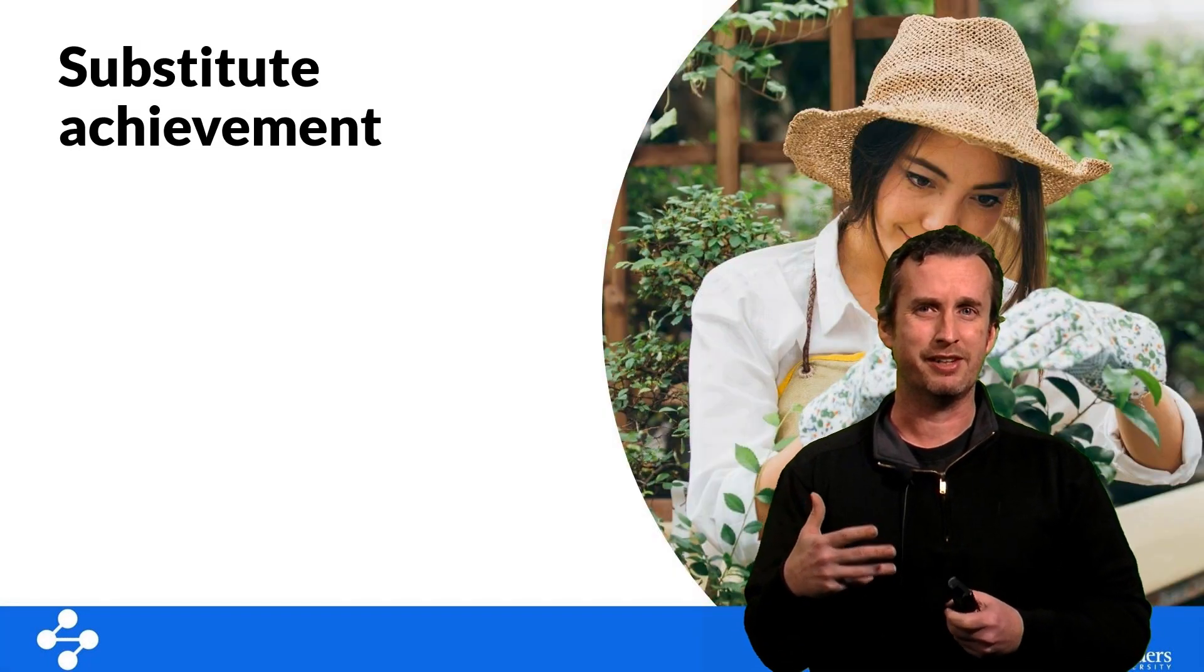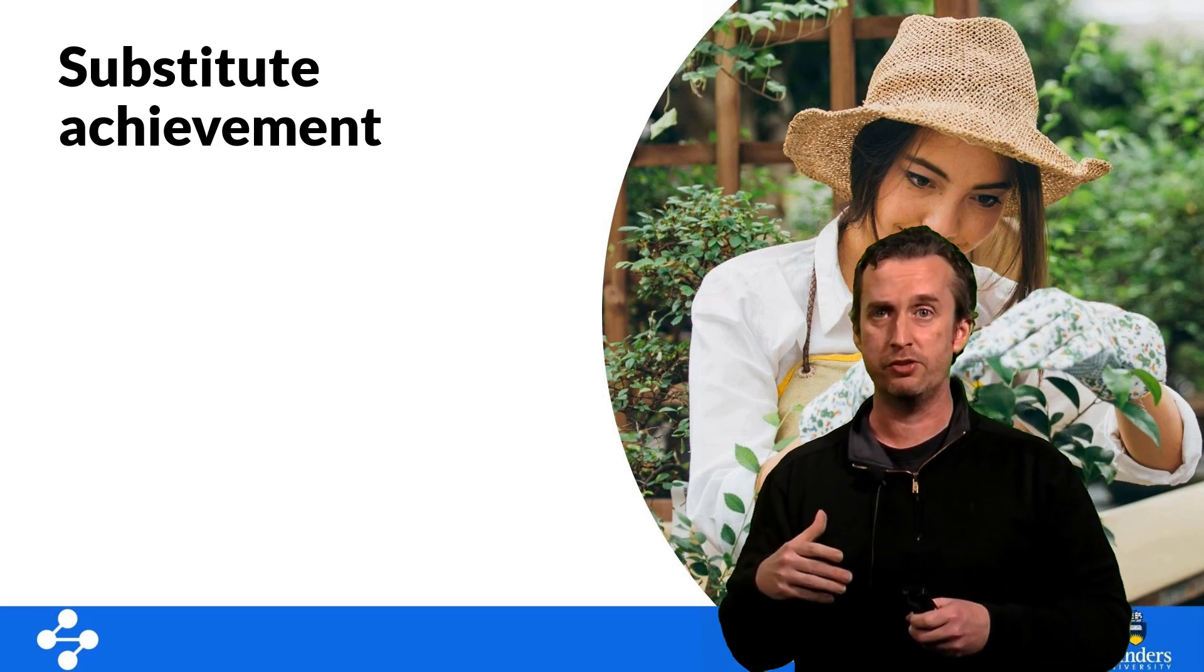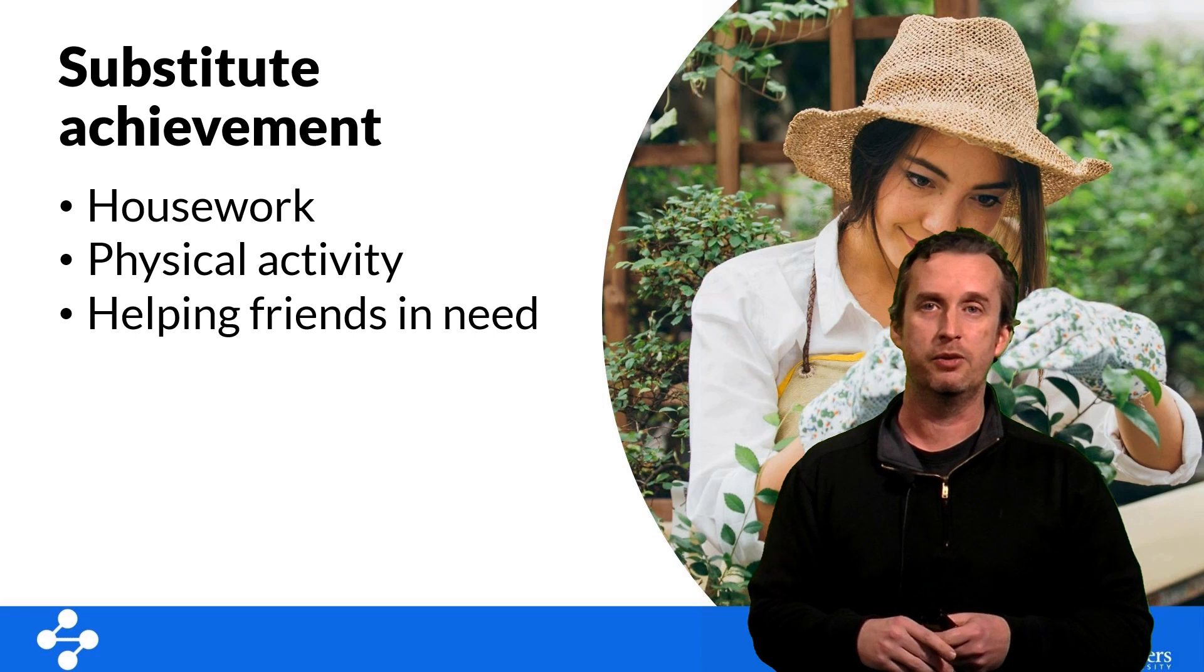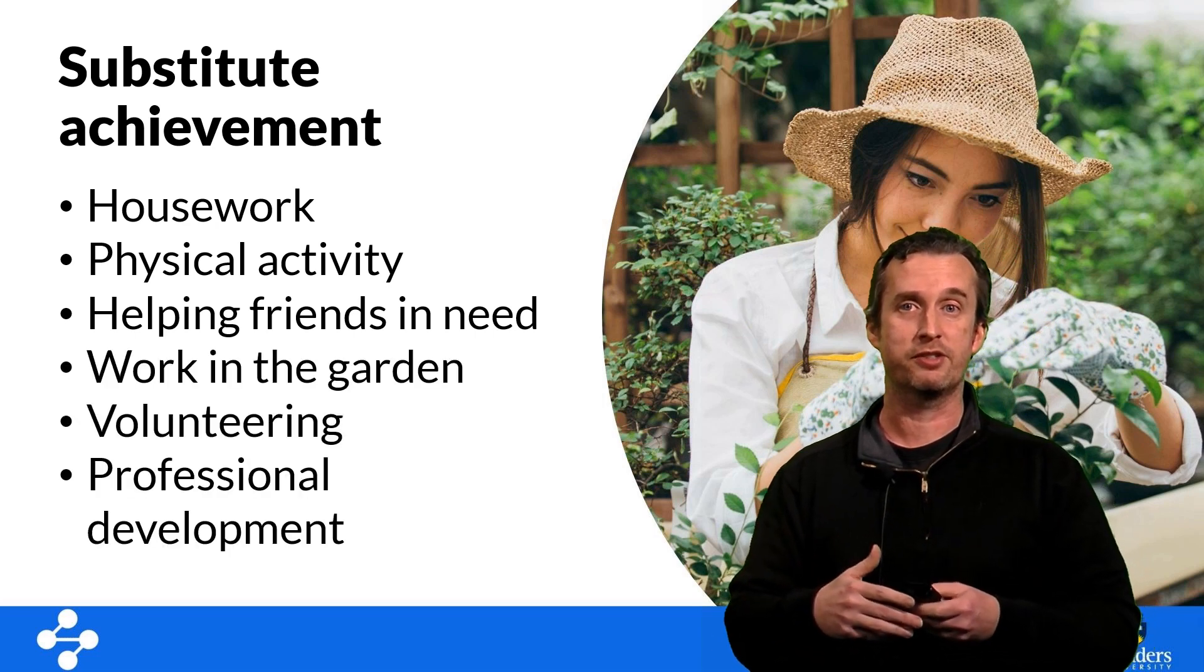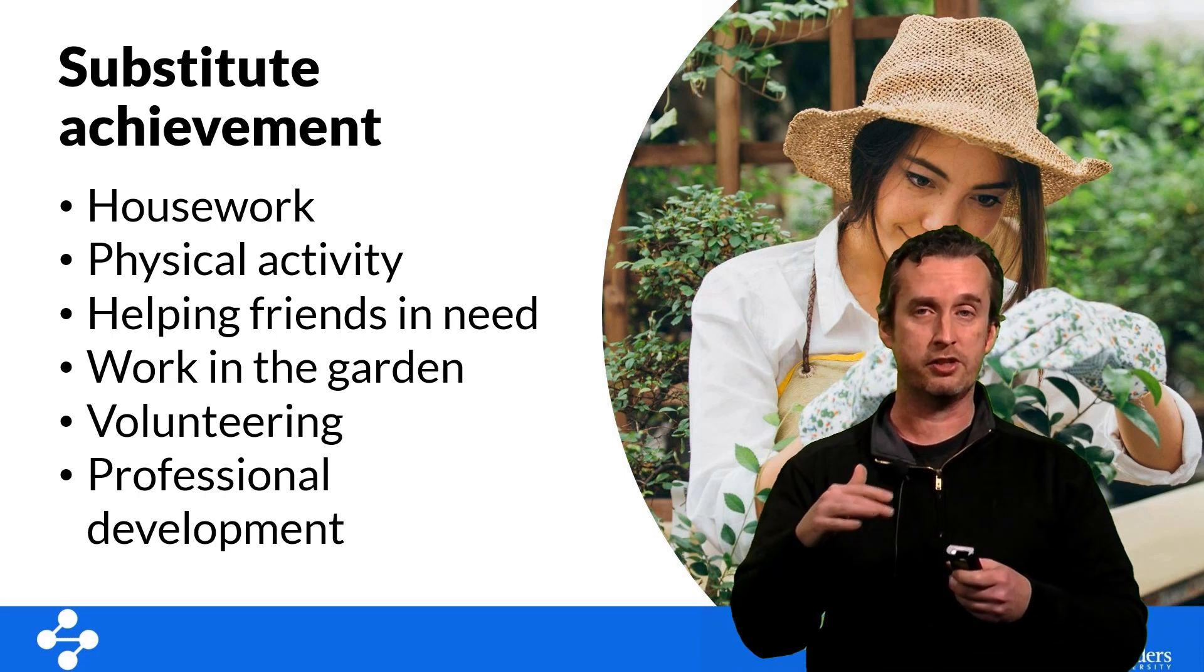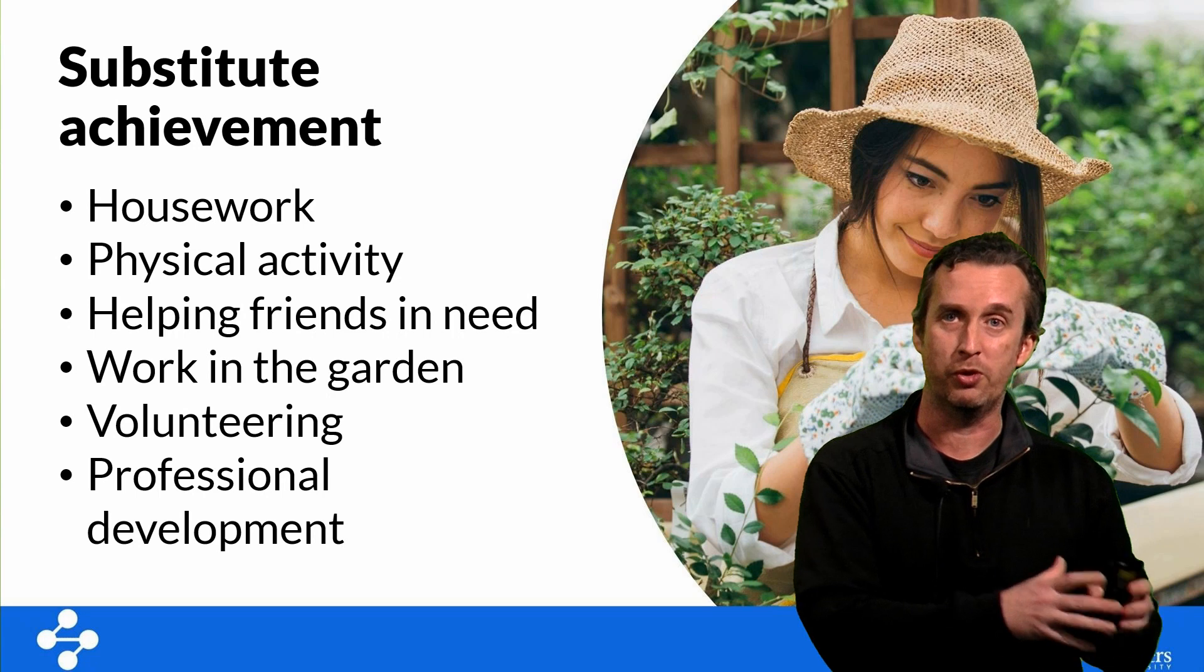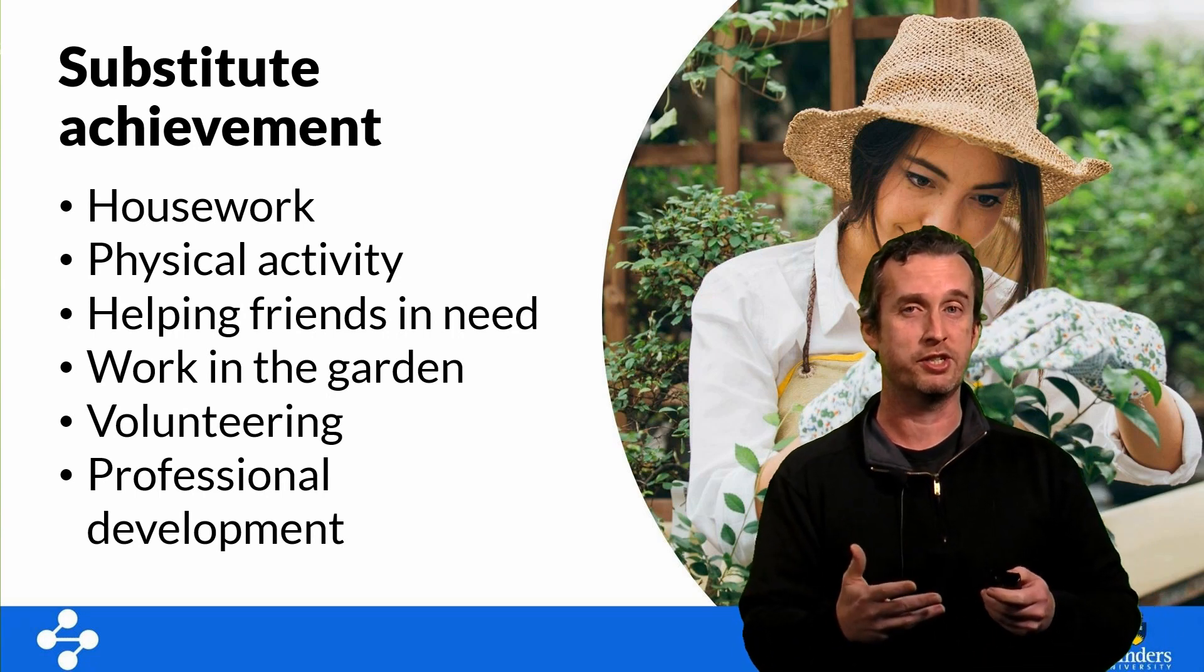Because we also experience guilt and shame when we're not working on what we should do, we often procrastinate using activities that actually make us feel better about ourselves. So we might clean the house, do some physical activity, help a friend in need, work in the garden, we might even do some volunteering or some other professional development. And these are all good activities, don't get me wrong, I want you to engage in these. But if we're doing these to avoid dealing with the fact that we're not actually doing the work we need to do, then we call that a substitute achievement rather than a primary achievement.